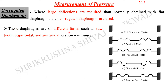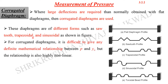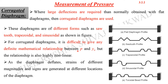These diaphragms of different forms — such as sawtooth, trapezoidal, and sinusoidal — are used for corrugated diaphragms. For a flat diaphragm, there is a linear relationship between pressure and deflection, where y₀ and P have a linear relation. But in the case of corrugated diaphragms, there is no definite linear relationship — a highly nonlinear relationship exists between pressure and deflection y₀.